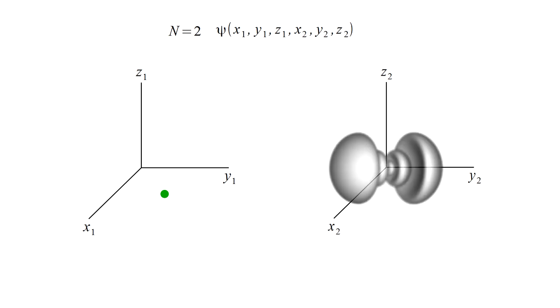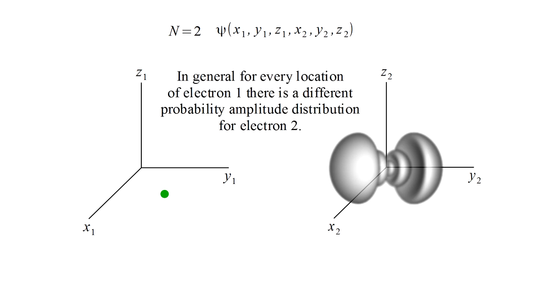In fact, it almost certainly will be. In general, for every location of electron one, there is a different probability amplitude distribution, or wave function, for electron two.